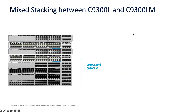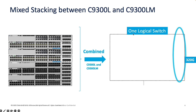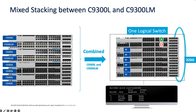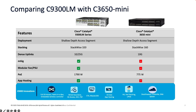To ensure deployment flexibility as well as resiliency, the Catalyst 9300 LM series switches support mixed stacking between the 9300L and LM series switches. Leveraging Cisco StackWise 320 architecture, you can stack up to eight of these switches to form one logical switch, or to form a unified control and management plane, providing a single plane of management and control.